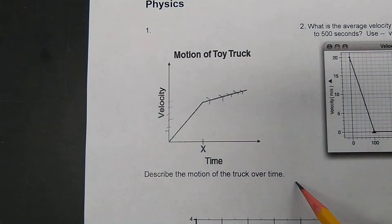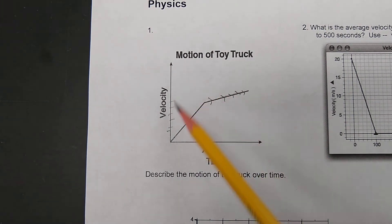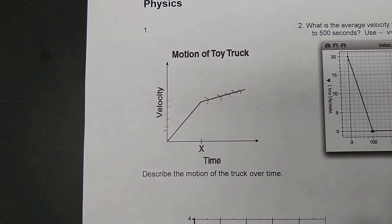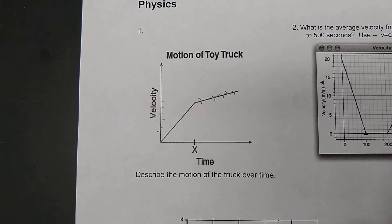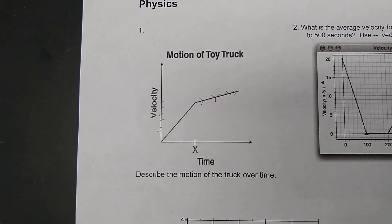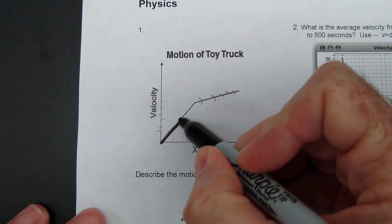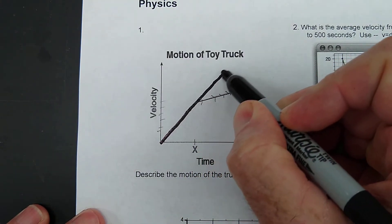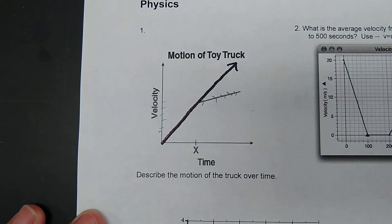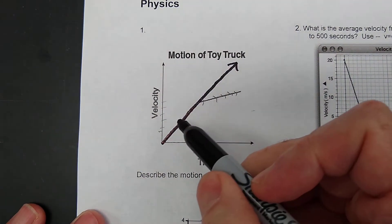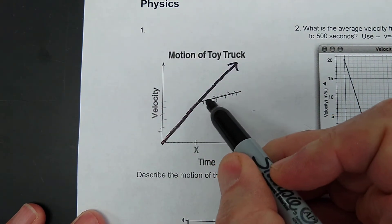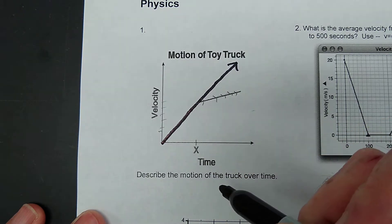Question number two: what would this graph look like if it showed an object constantly accelerating, or accelerating at a steady rate? It would look like a straight line — that's a constant acceleration. This car is accelerating here, and it's still accelerating here, but just not at the same rate.